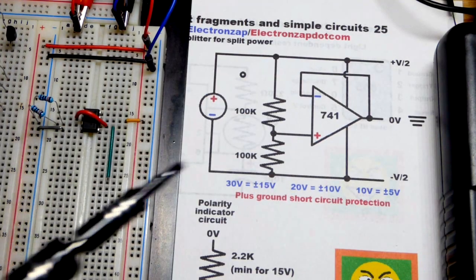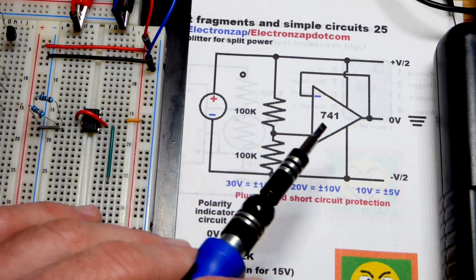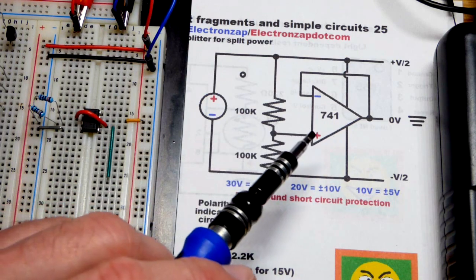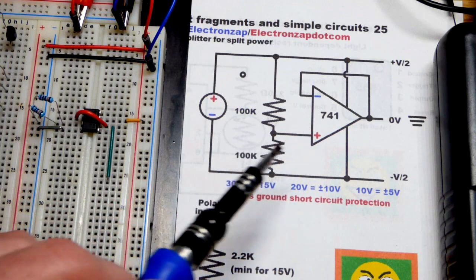This is the first video of this series using the 741 op amp. These are very common and not very expensive. You'll see all kinds of literature on them and demonstration circuits.